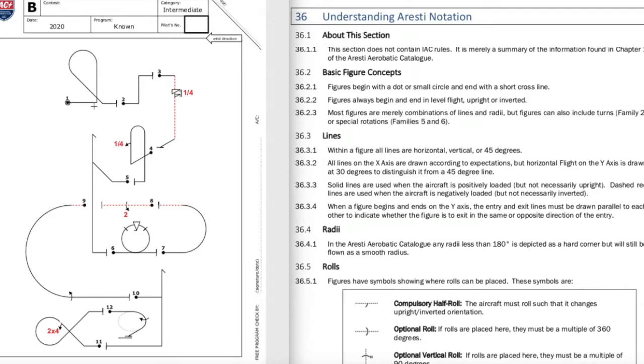Let's talk about the line portion. Within a figure all lines are horizontal, vertical, or 45 degrees. So now it's talking about axes here. If you have anything that runs side to side here, you're dealing with the X axis. Anything that's running at this 30 degree angle, you're dealing with what we call the Y axis.